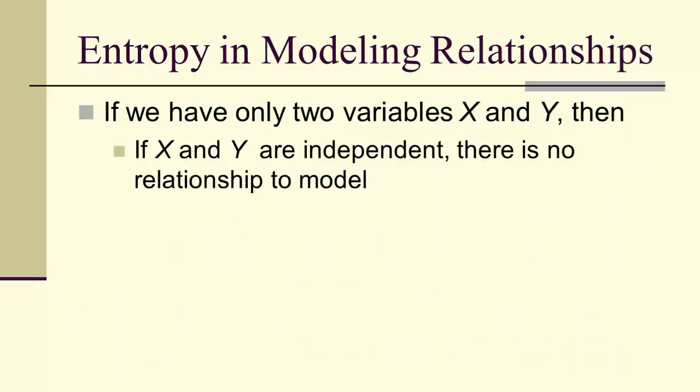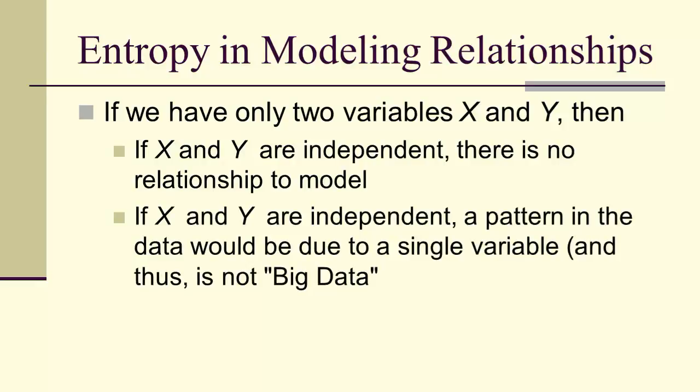If we have only two independent variables, then there's no relationship to model. So we can't get any information from Y by asking how it depends on X. So if we had a pattern in the data, and we only have two variables, then X and Y would be independent, and there's therefore no big data there. We only have patterns due to a single variable.